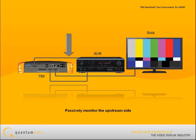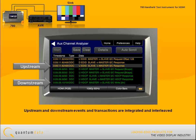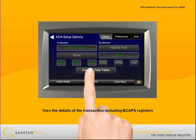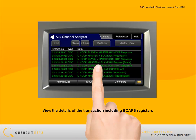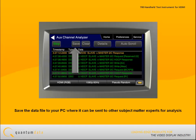For example, you can use the 780 to emulate a known good HDMI source device and monitor the upstream events and transactions between the 780 and the input side of an AV receiver, while passively monitoring the downstream events and transactions between the output of the AV receiver and the display device. Whether you are in emulation mode or passive monitoring mode, the upstream and downstream events and transactions are integrated and interleaved within the 780 display window. You can select any transaction and view its details — for example, selecting an HDCP read response of the BCAPS register. Once captured, the transaction data can be saved to your PC and sent to other subject matter experts for analysis.